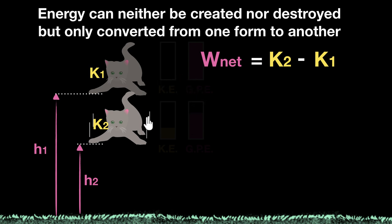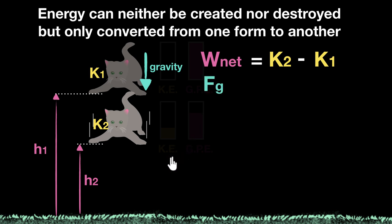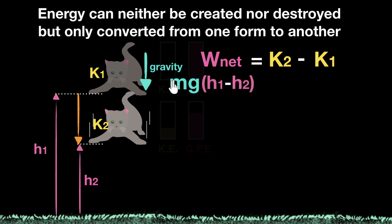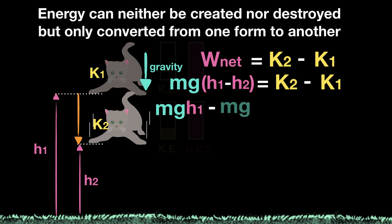Let's calculate the work done by all the forces on this cat. There's only one force — the force of gravity. We're ignoring air resistance because that force is usually pretty small. The work done by gravity will be the force of gravity, mg, multiplied by the displacement of the object. The cat went from h1 to h2, so the displacement is h1 minus h2. So our total work done is mg times (h1 minus h2), and that should equal k2 minus k1. Expanding: mgh1 minus mgh2 equals k2 minus k1.